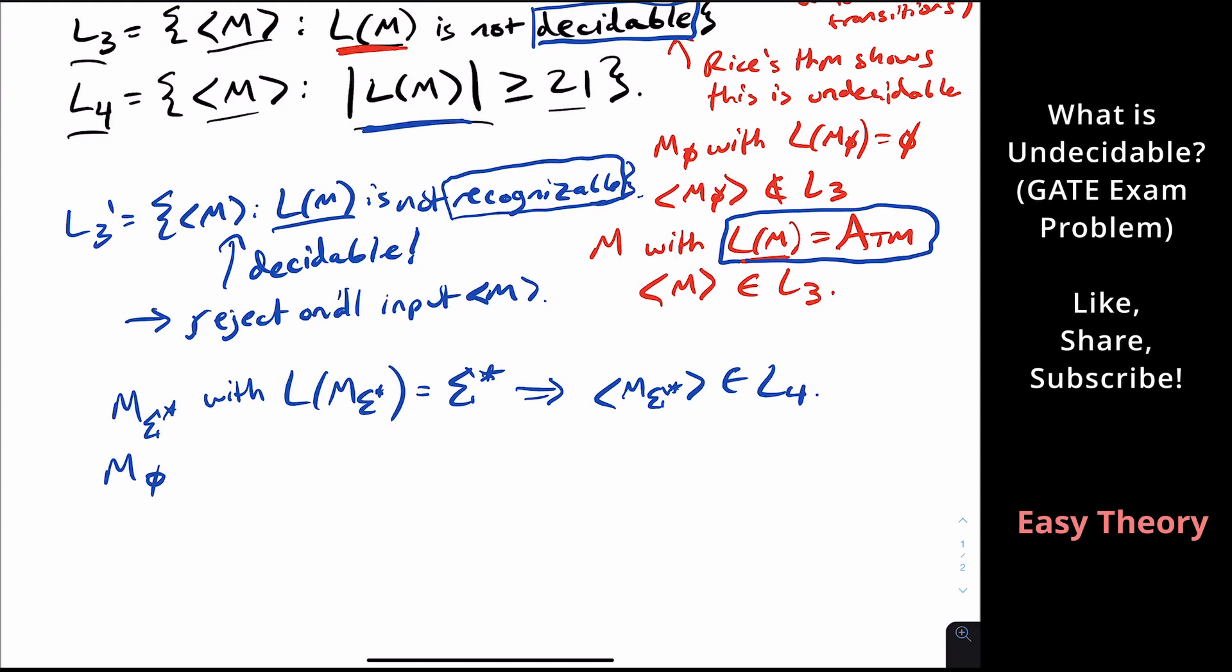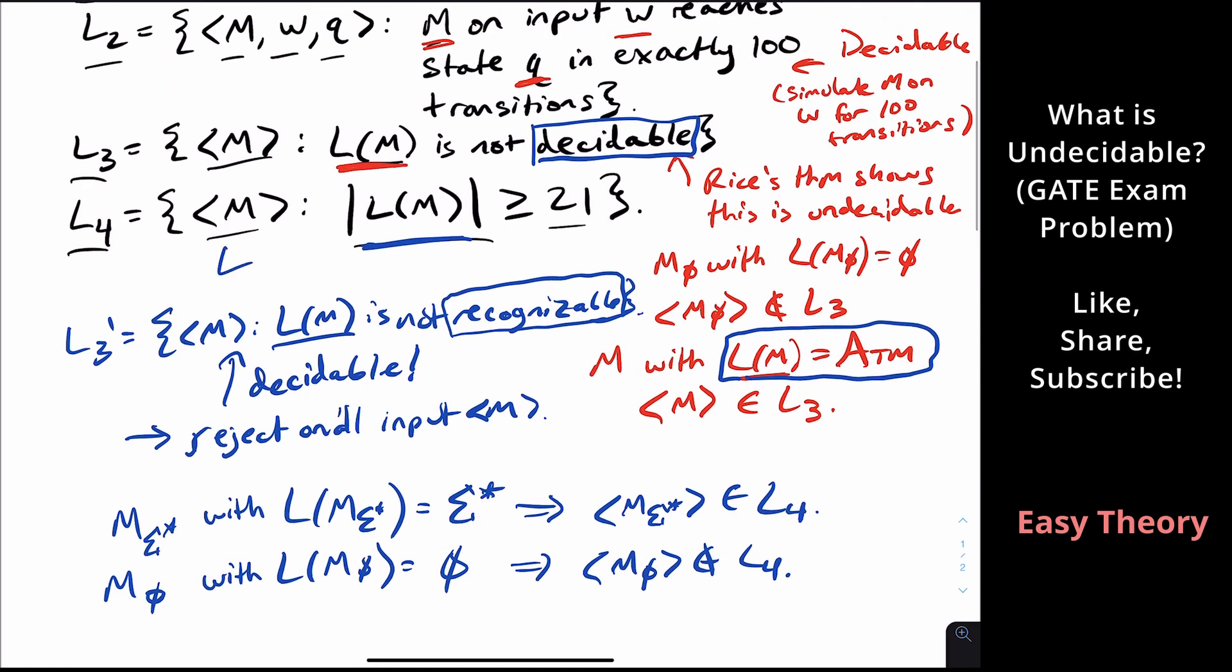And then if we take the same machine before m sub empty with L of that machine being empty, well that is certainly less than 21 strings. So that means that m sub empty is not in L4. So by Rice's theorem, L4 is undecidable too.